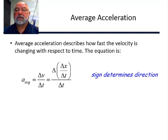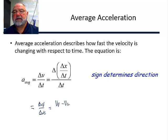That's how we end up with units of meters per second squared. The sign determines the direction. Remember that delta V over delta T is equal to V final minus V initial over the time interval.